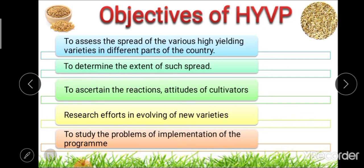Under this objective, the program was judged on whether the high-yielding varieties spread to different parts of the country and to determine the extent of such spread. Another objective is to ascertain the reaction and attitudes of cultivators participating in the program.